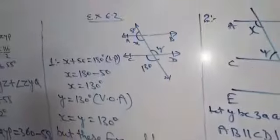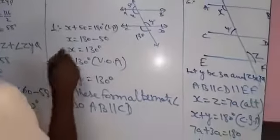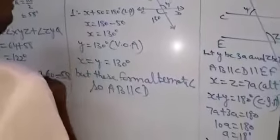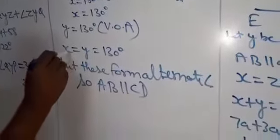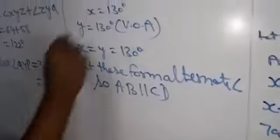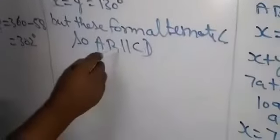Find the value of X and Y, and show that AB is parallel to CD. In the figure, line AB and line CD are intersected by a transversal. The given angles are 50 degrees, X, Y, and 130 degrees. X plus 50 is equal to 180 (linear pair), so X equals 180 minus 50, giving X equal to 130. And Y is equal to 130 because they are vertically opposite angles.